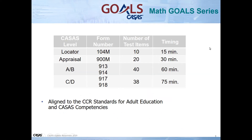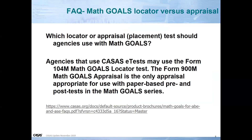You'll see the list of test items here with the timing in the right-hand column. It's important to note that both the Reading and Math Goals series are aligned to CCR standards and the CASAS competencies. You can locate that information on the website. Many of you have been asking about the Math Goals locator versus appraisal.